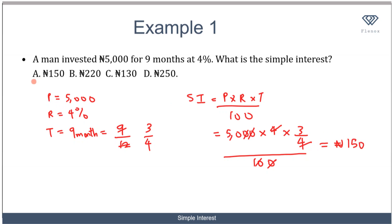So A is the answer. The interest that the man will gain at the end of 9 months is N150. Now you can see why it is important not to forget to convert the months to years. If you had written it as 9 here directly, what that would have meant was that you were keeping it for 9 years and not 9 months. You must take note to always ensure that your time unit is in years.